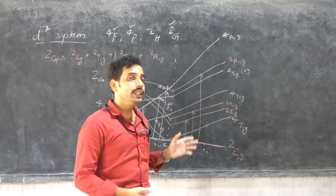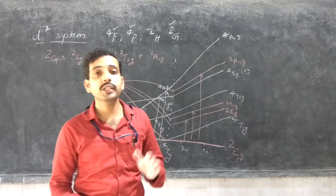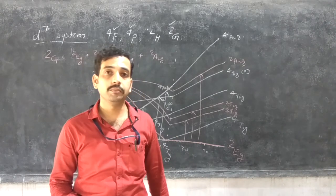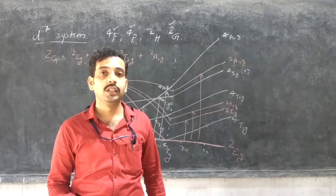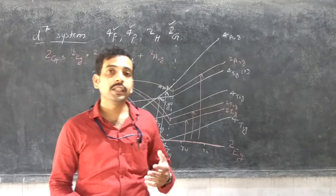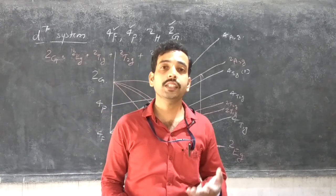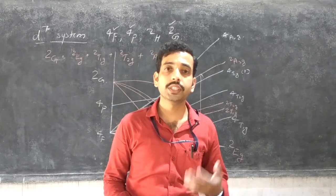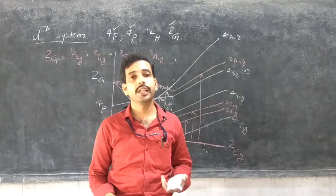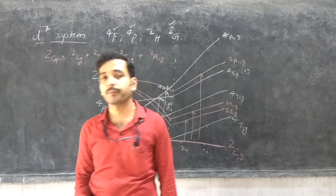So D4 to D7 systems — D4, D5, D6, and D7 — these are the complicated Tanabe-Sugano diagrams. For the easiest way to draw the Tanabe-Sugano diagram, use the help of Bethe terms, Mulliken terms, as well as Russell-Saunders terms. Up to this point is the Tanabe-Sugano diagram. In the next video, we start the Racah parameter. Thank you for watching.